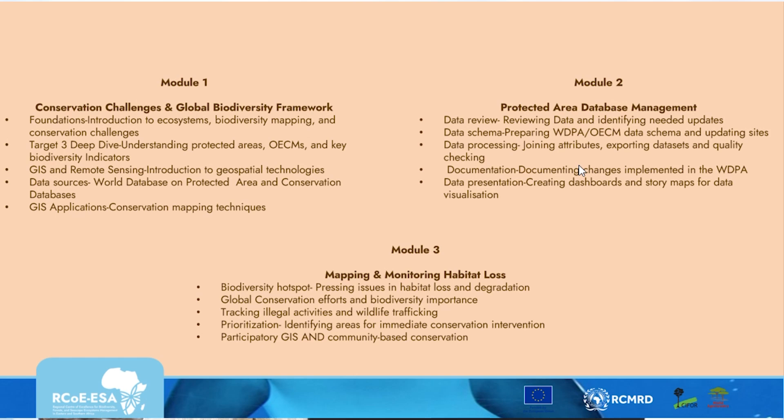In the previous modules — module one and module two — we talked about conservation challenges and the global biodiversity framework, and we talked about protected area data management. So in module three, we want to connect the two and now move to a deeper dive into biodiversity hotspot habitats. We'll look at how we can track illegal activities in conservation, how we prioritize conservation areas, and how we involve the community.